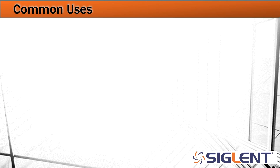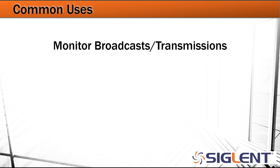Some common uses for a spectrum analyzer include monitoring broadcasts and transmissions. This would be FM, AM, Wi-Fi, Bluetooth — anything that we're communicating wirelessly from one place to another, where we may want to see what the amplitude is and over what frequency ranges we may be concerned with.